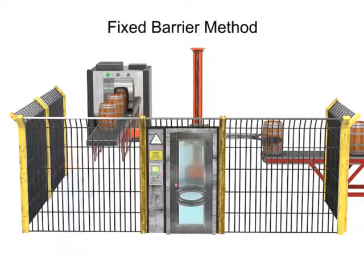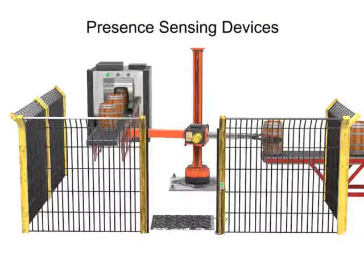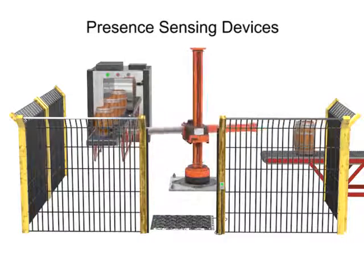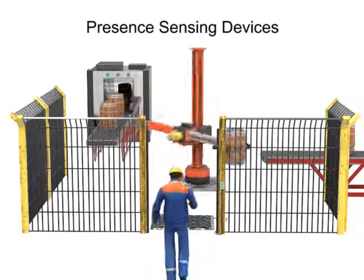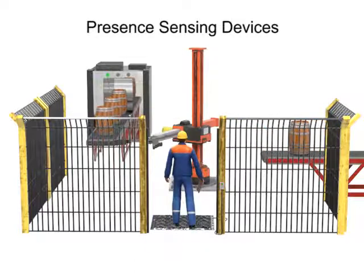Another method of protecting the robot's work envelope employs the use of presence sensing devices. These devices detect the entry of a person into a hazardous area and slow or stop the robot. Pressure mats are typically installed just outside the robot's work envelope. When a person steps on the mat, a signal is sent to the robot to stop or slow work.